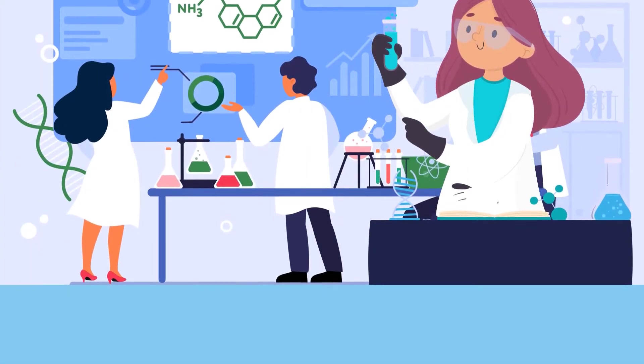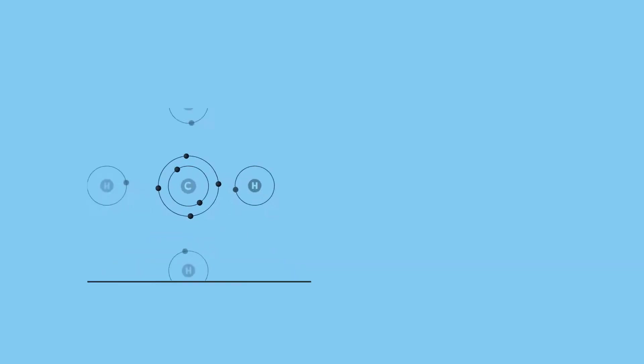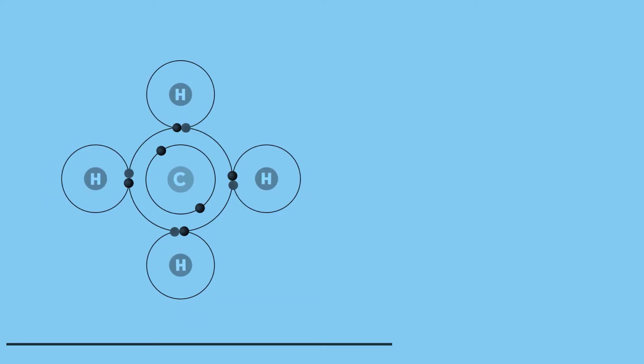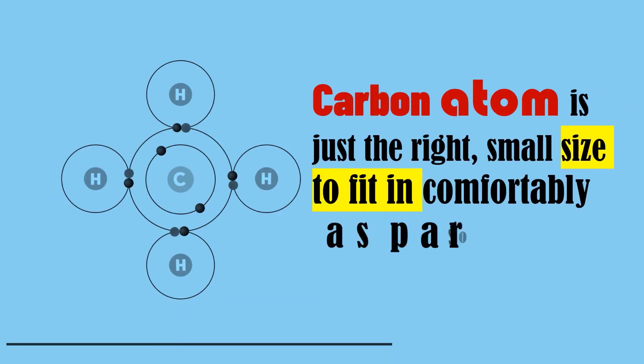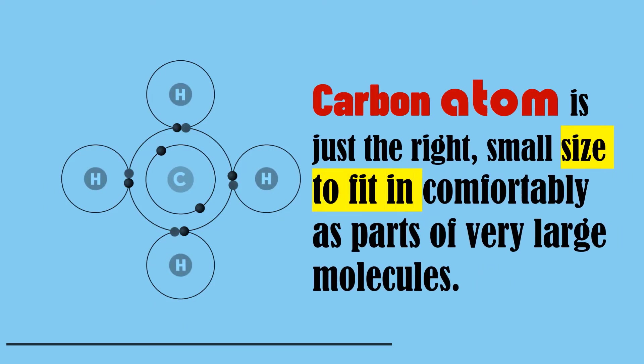Carbon is the only element that can form so many different compounds because each carbon atom can form four chemical bonds to other atoms, and because the carbon atom is just the right, small size to fit in comfortably as parts of very large molecules.